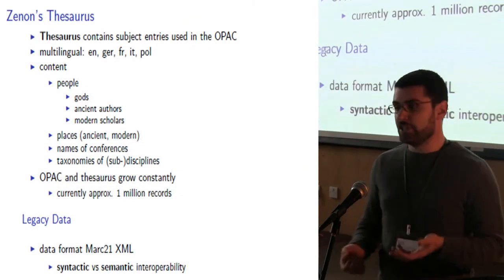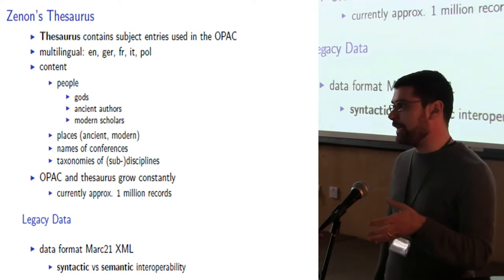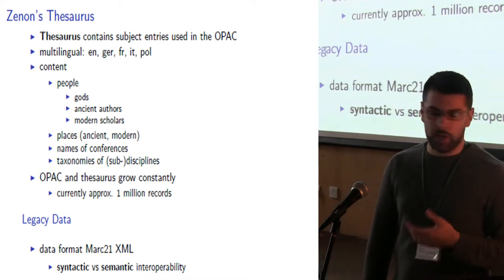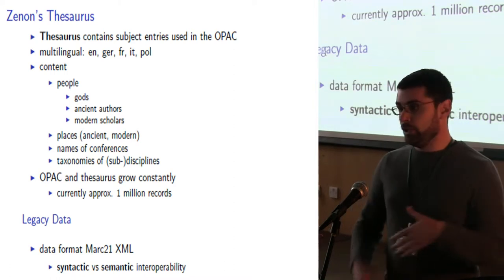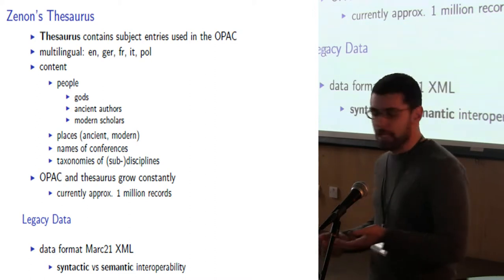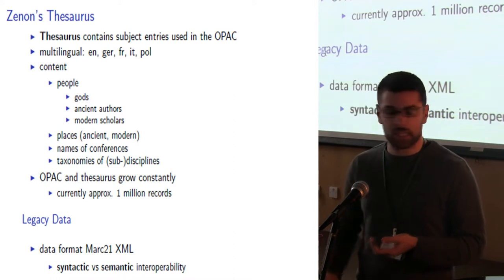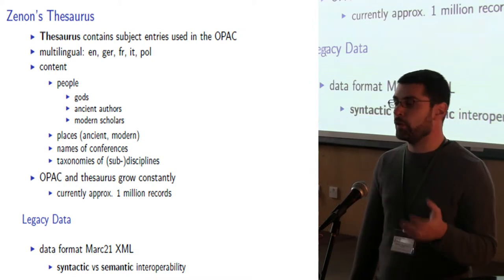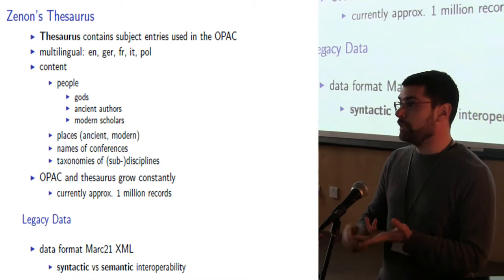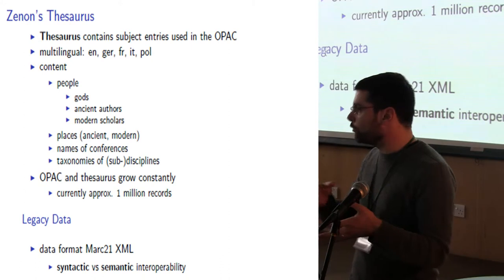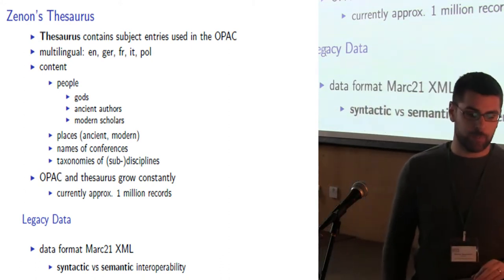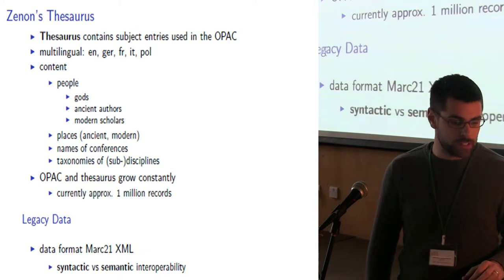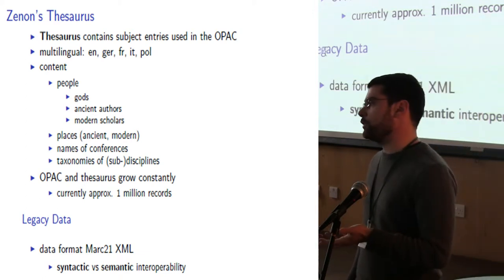The thesaurus contains subject entries that are used in the OPAC. It's multilingual — it's not always the case that the labels for concepts in the thesaurus are in all these languages, but they tend to be in English, German, French, Italian, and Polish. The thesaurus contains many things: names of people like gods, ancient authors, modern scholars, but also names of places — modern and ancient ones — names of conferences, for instance, because the OPAC contains data about monographs, conference proceedings, and journal articles. Whenever there is a conference, there will be an entry in the thesaurus. As I said already, the OPAC is growing, and currently there are approximately a million records, all in MARC21 XML format.